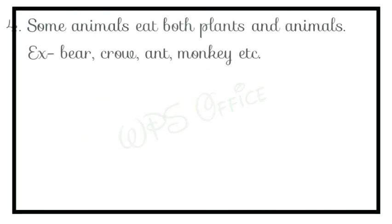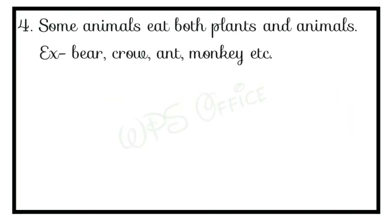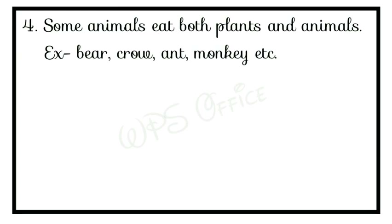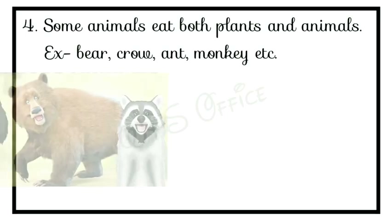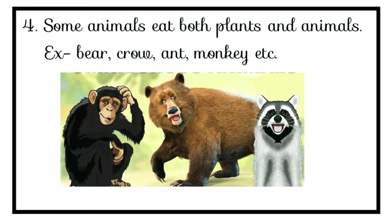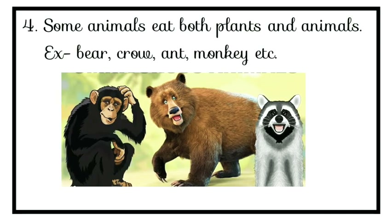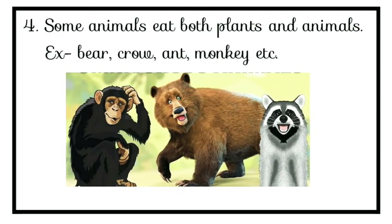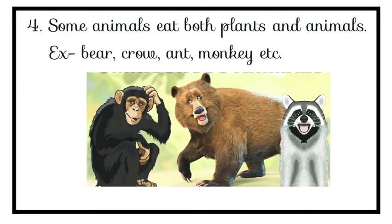Some animals eat both plants and animals — they are omnivores. For example, bear, crow, ant, and monkey. Ants eat everything, and monkeys also eat both — they consume products from both plants and animals.